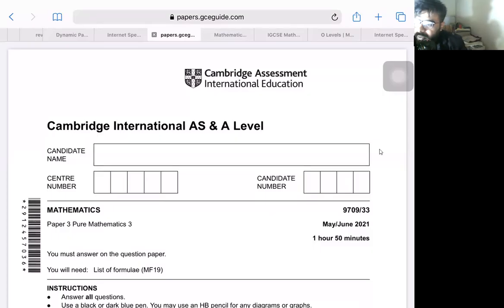Assalamualaikum students, this is Hamza Noor and in this particular video we are going to discuss questions from A Level Maths 9709 Pure Mathematics 3. This paper is May June 2021 paper 3 variant 3.